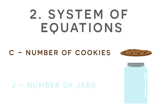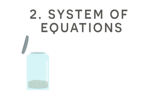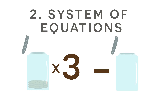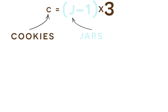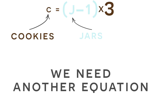Let's let C represent the number of cookies, and we'll let J represent the number of jars. If we go back to the beginning of this problem, we said that if there were three cookies in every jar, there would be one jar left over. So we can find the number of cookies by multiplying each jar by three, except for one of them because one is empty. So C is equal to J minus one, multiplied by three. So now we have one equation but two variables — we need another equation to solve this problem.